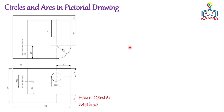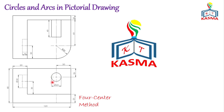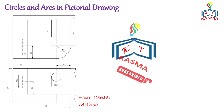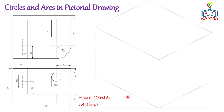In this example, I will show you how we could project the circular features on a pictorial drawing. That means the circular features given on the multi-view drawing can be transferred into an ellipse on a pictorial drawing. I will show you this by using a four-center method.